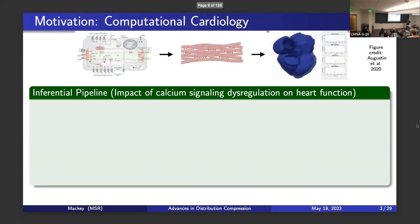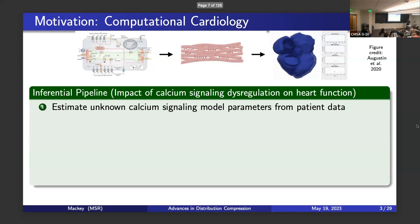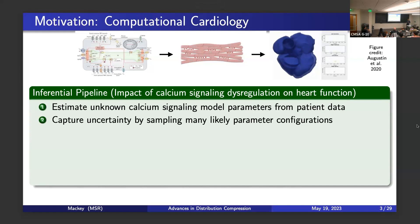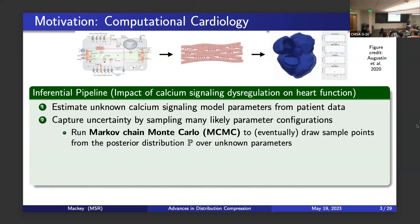From an inferential standpoint, for a patient you need to estimate the unknown parameters in calcium signaling. We have models of how calcium signaling works, but they have unknown parameters we must fit to patient data. That gives us uncertainty, and we need to capture it. The typical way is to sample many likely parameter configurations using Markov chain Monte Carlo — sampling from the posterior distribution over unknown parameters given patient data.